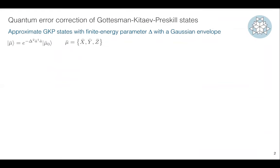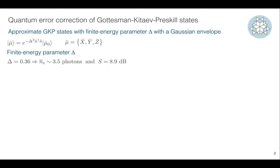Because so many people have talked about GKP states in this workshop, I can start right away and not even define what a GKP state is. I'll simply remind you that we work with finite energy GKP states, which is done by imposing a Gaussian envelope by penalizing our energy states. We quantify this by the finite energy parameter delta, and throughout this talk we will work with a single value of 0.36.